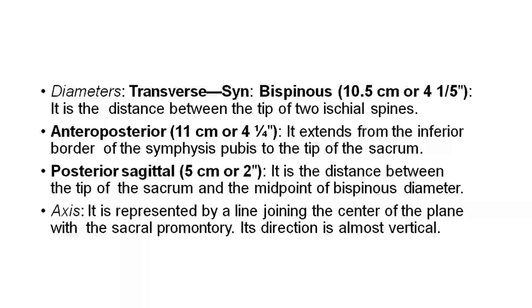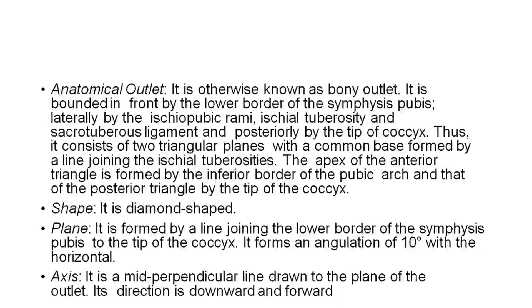Axis: It is represented by the line joining the center of the plane with the sacral promontory; its direction is almost vertical. Anatomical outlet (bony outlet): It is bounded in front by the lower border of the symphysis pubis, laterally by the ischiopubic rami, ischial tuberosity, and sacrotuberous ligament, and posteriorly by the tip of the coccyx.